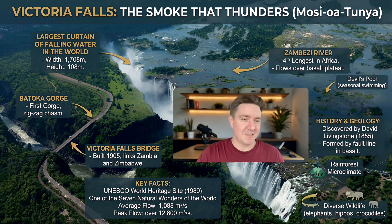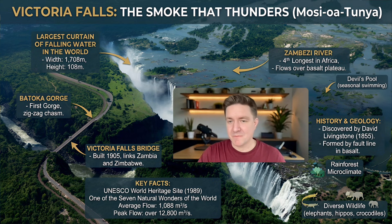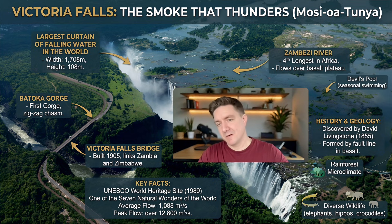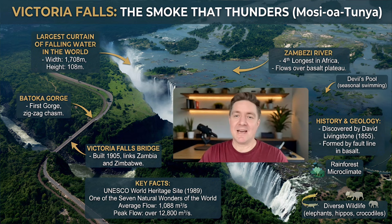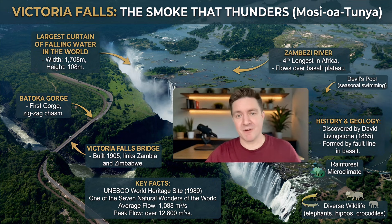It also shows details about the bridge built in 1905 which links Zambia and Zimbabwe, that it's a UNESCO World Heritage Site, information about the rainforest microclimate, and that you get elephants, hippos, and crocodiles there. It was discovered by the Western world by David Livingstone in 1855, formed by a fault line, with the Zambezi River coming over Victoria Falls — the fourth longest river in Africa.